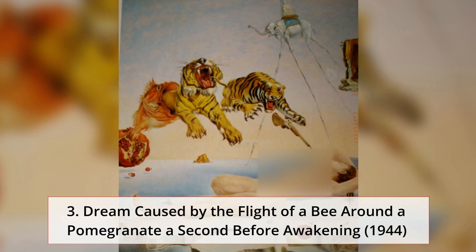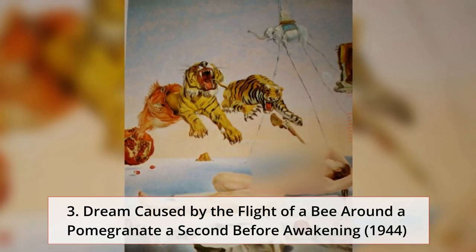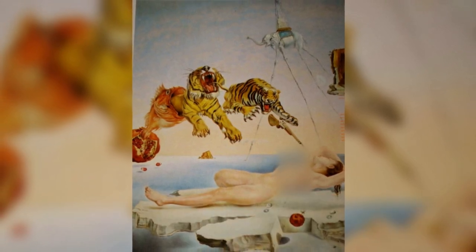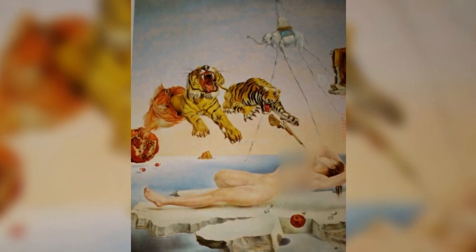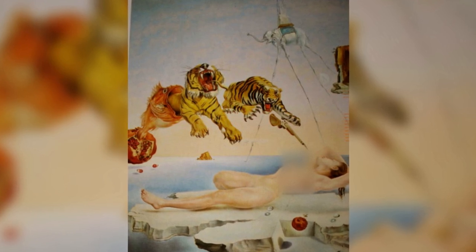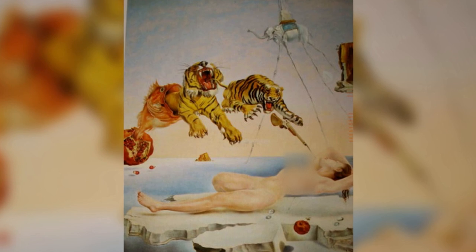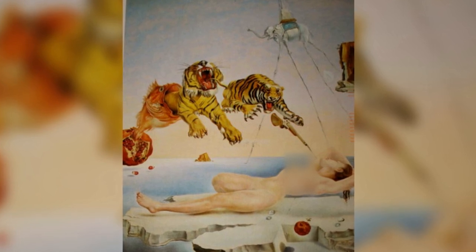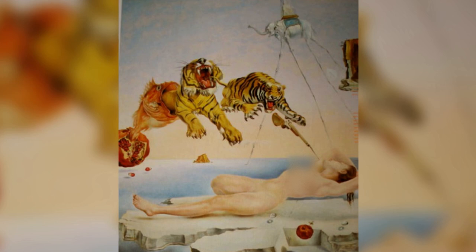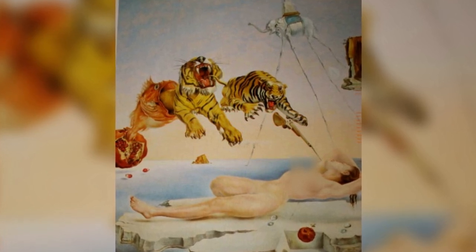3. Dream Caused by the Flight of a Bee Around a Pomegranate a Second Before Awakening, 1944. This painting depicts a coastline with vast horizons and tranquil waves. Dali displays two suspended drops of water and a pomegranate, a symbol of fertility and resurrection, next to the nude figure of the sleeping lady, which levitates atop a flat rock floating above the sea. A bee hovers above the pomegranate.